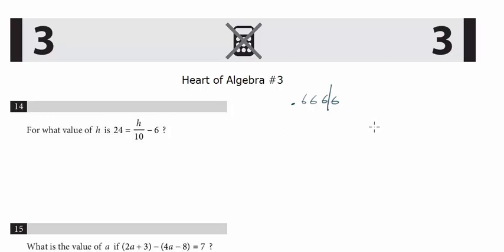Also, there's no negatives on grid-ins. Sometimes you see the phrase on grid-ins, what is one possible value, so that means there's more than one correct solution. You just have to find one. So just keep that in mind with the grid-ins.